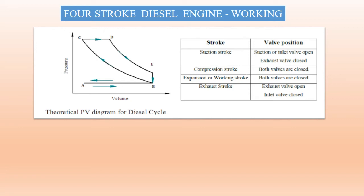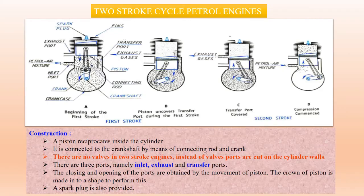For a four stroke engine, two complete revolutions of the crankshaft are required to complete one cycle — one revolution per every two strokes. Now, the two stroke petrol engine requires only one crankshaft revolution to complete one cycle. In the two stroke engine, there are no valves — instead, three ports are used: inlet port, exhaust port, and transfer port. The two stroke engine produces almost double the power of a four stroke engine, but the emissions are also higher, which is why two stroke cycles are being phased out.